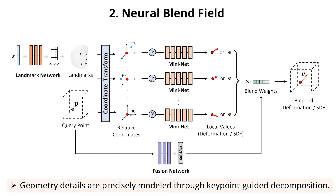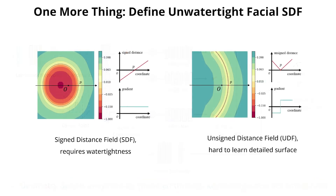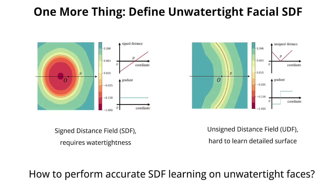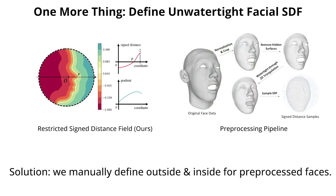Before training, we have one more problem to solve. So far, INR works well only on closed surfaces. However, most 3D faces are captured as open surfaces. How to perform accurate SDF learning on non-watertight faces? We give a simple and effective solution: pre-process and manually define outside and inside, which achieves non-watertight SDF learning and high quality simultaneously.